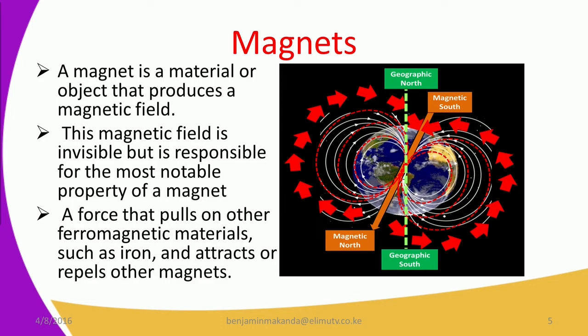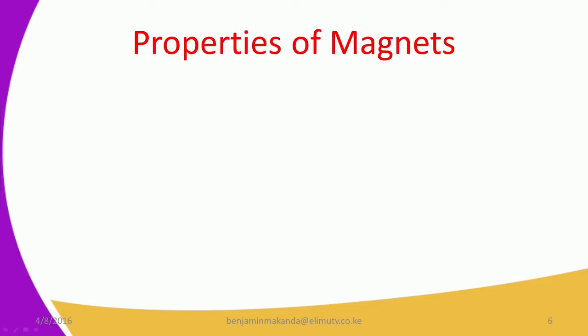This diagram shows us the magnetic field and magnetic lines of force and how they behave. We have a geographical sphere here with geographic north and geographic south. We also have the magnetic north and the magnetic south, detected by the magnetic lines of force. The red arrows indicate the direction towards which the field of a magnet moves. The magnetic lines of force always move from the north pole to the south pole.